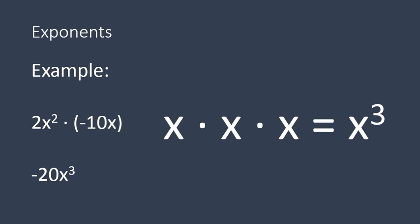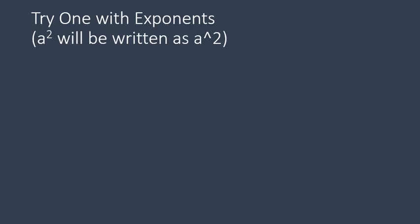Are we noticing any patterns with these variables, with these exponents? I'm going to give you a question to go ahead and solve: 4a times 5a. Inside the curious question world, a to the power of 2 will be written using a little pi mark as you see there — that means a to the power of 2 moving forward. When you multiplied them together, you should have gotten 20a to the power of 2. 4 times 5 is 20, and a times a is a to the power of 2.